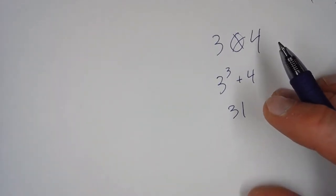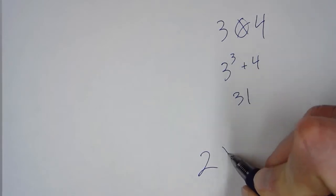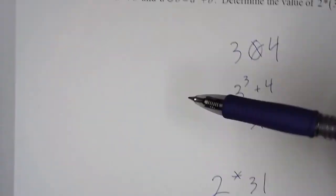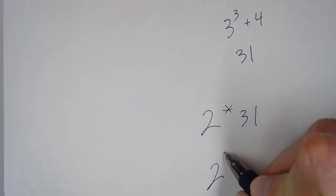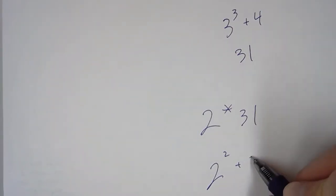So now, what we want is to take 2 star 31. Following the rule here, we take the first number, which is 2, and square it. And then onto that, we add 31.